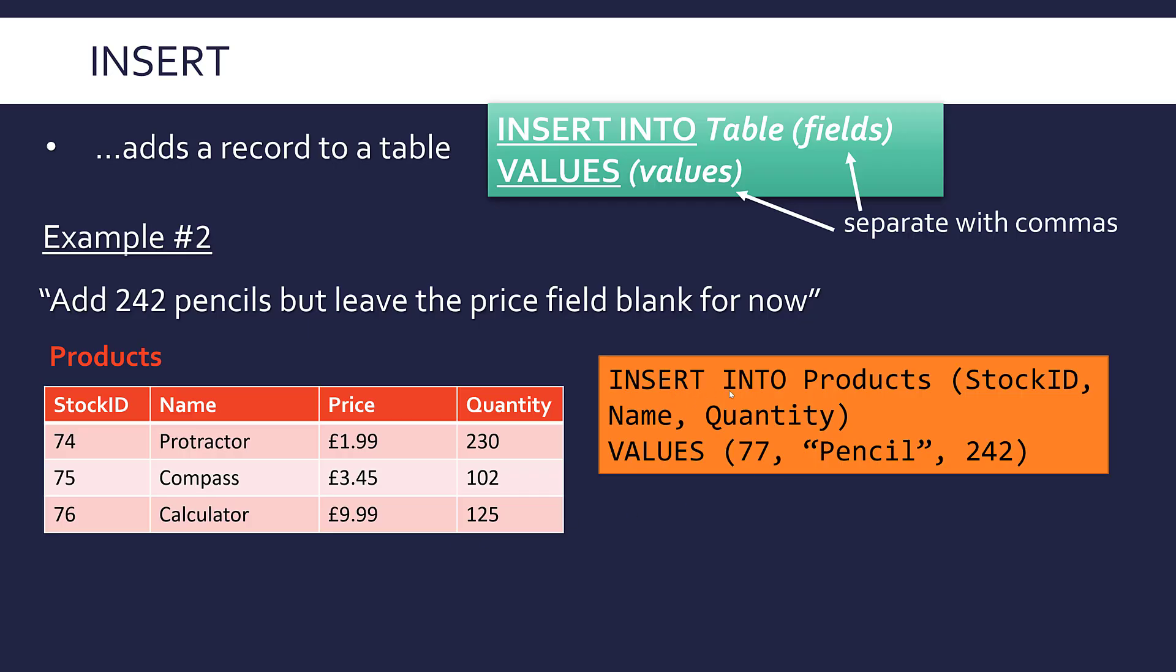So here, again, INSERT INTO Products is the same. This time I'm only specifying three columns. I've only got StockID, Name, and Quantity. And so I'm matching up 77 to StockID, Pencil to Name, and 242 to Quantity. I haven't got a price because I don't need one here in this scenario. You could equally just put in price and leave it blank, but you'd have to have a value in your list. So this will just add another record with a blank price. If you do have gaps, like I say, they're not super common and they're not necessarily a great sign, but they do happen. They are called a null field. If something is null, it means it is empty.